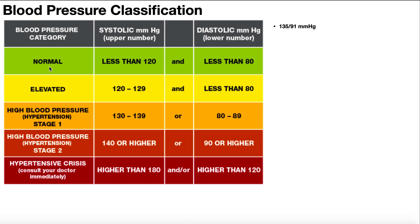A normal healthy blood pressure is classified as being less than 120 over 80. That means the systolic should be less than 120 millimeters of mercury, and the diastolic blood pressure needs to be less than 80 millimeters of mercury.